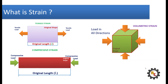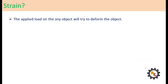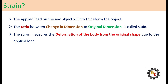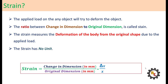First, what is strain? Whenever a material is subjected to any kind of load, it will tend to deform its shape. The strain is the ratio between change in dimension to original dimension, and it measures the deformation of the body from the original shape due to the applied load. The strain has no unit. Mathematically, strain is the ratio between change in dimension to original dimension.